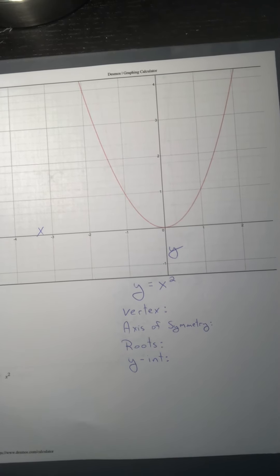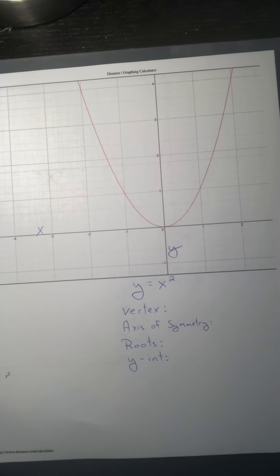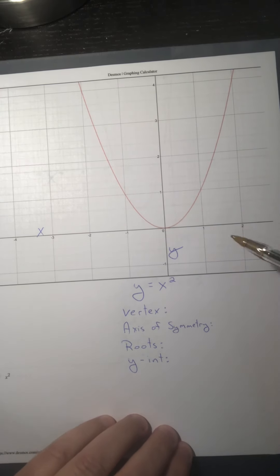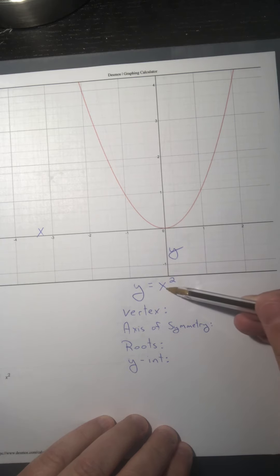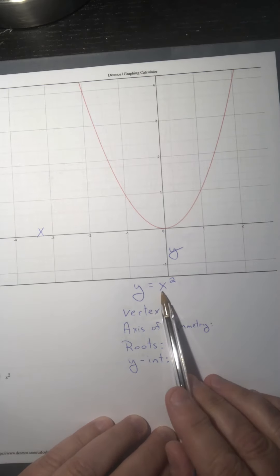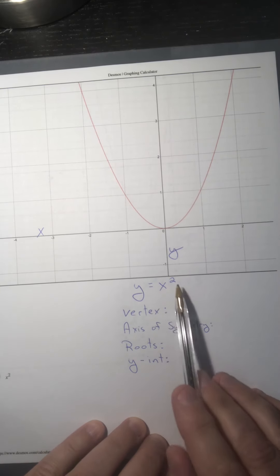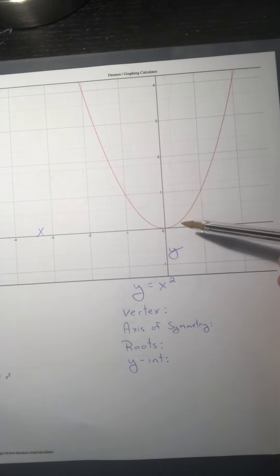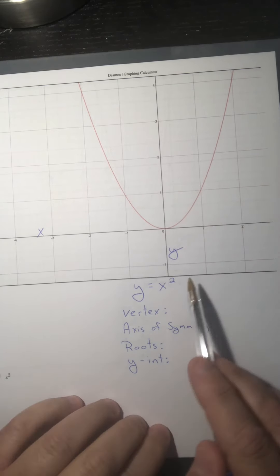We have spent a lot of time solving quadratic equations using multiple different types of steps. Now we're going to start looking at the graphs that a quadratic equation produces. What makes something a quadratic is that the highest exponent is 2 — so something like x squared plus 7x minus 2. This graph is actually called the parent graph of a quadratic, because there's nothing else added to it.